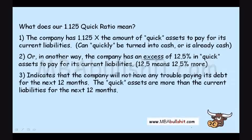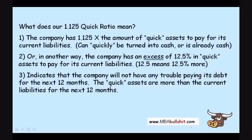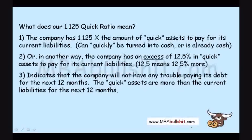Current assets means easily convertible to cash within the next 12 months. Current liabilities means liabilities which need to be paid in cash within the next 12 months. So the quick assets are more than the current liabilities for the next 12 months, and these quick assets can be used to pay for these liabilities. In fact, the company has an excess of 12.5% in quick assets.